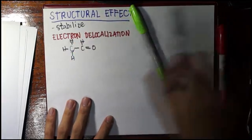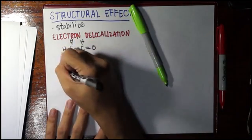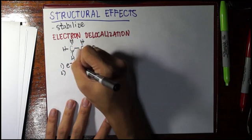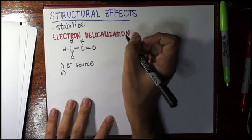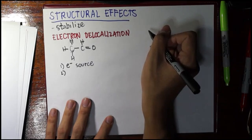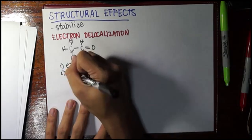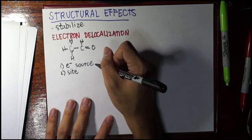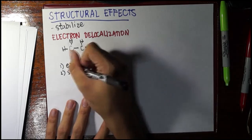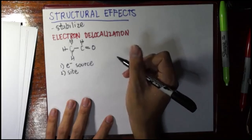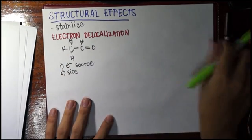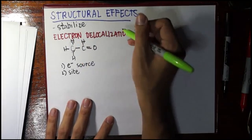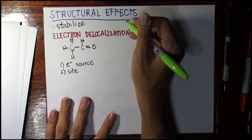We can subdivide this into several types depending on certain requirements. We have two requirements for electron delocalization: first is an electron source—if there is no electron source then there would be nothing to delocalize. The second would be the site of movement. If there is no place to move, then the electrons, even if present, would not be able to move. We could classify the type of electron delocalization based on the electron source.